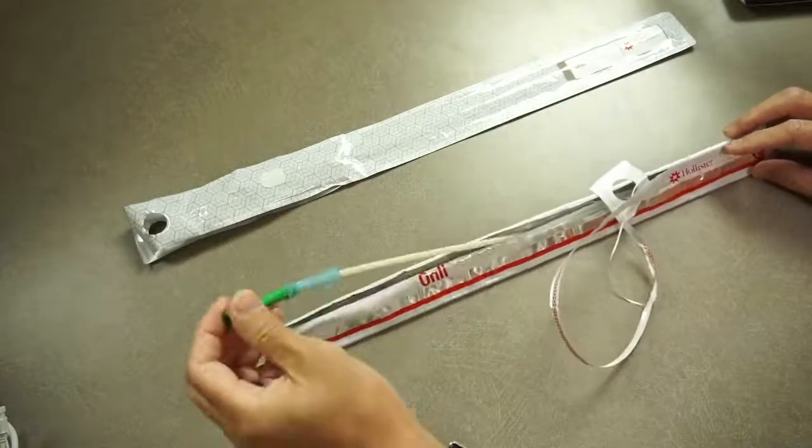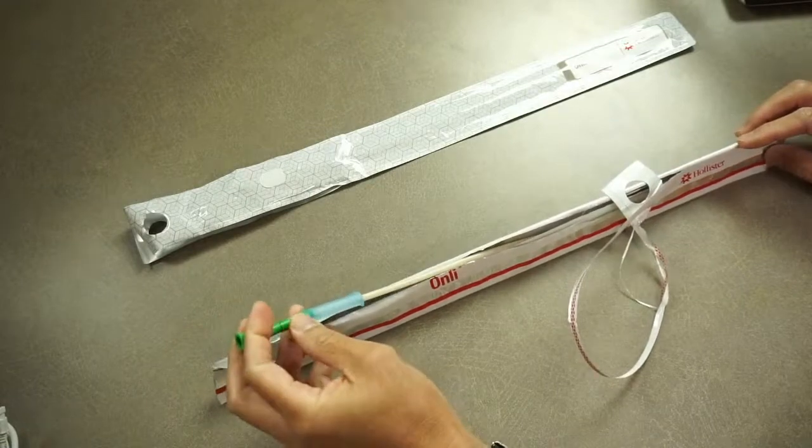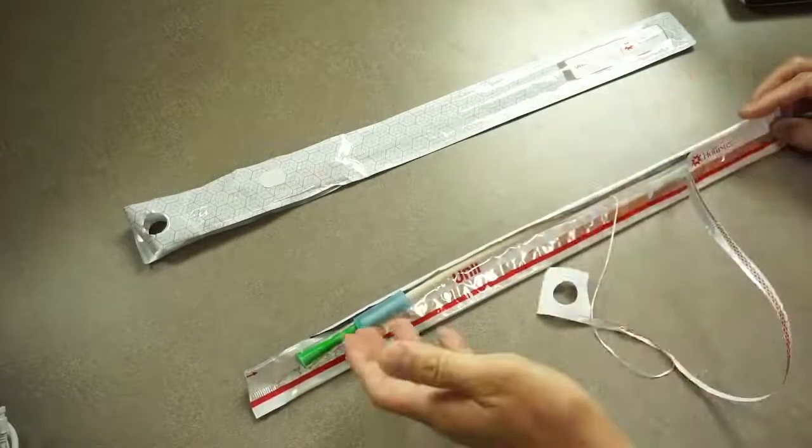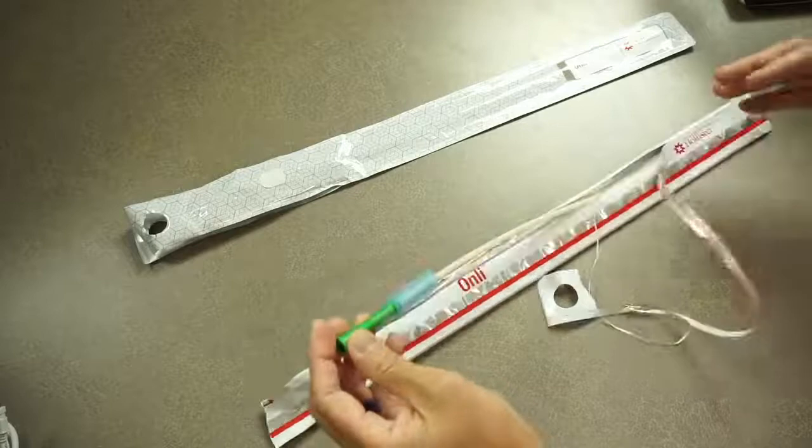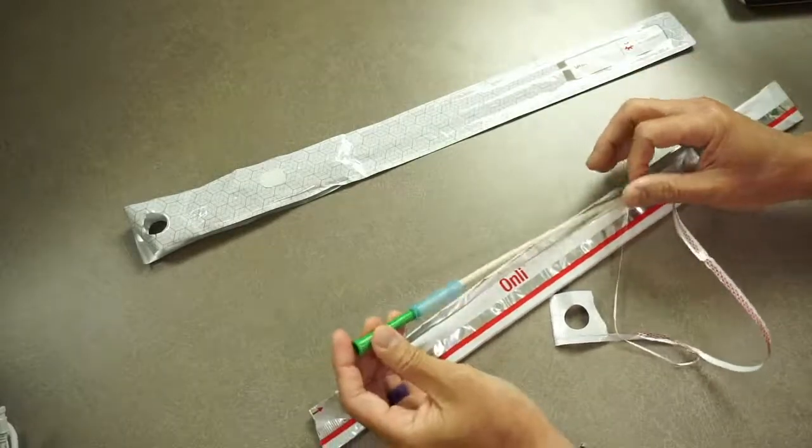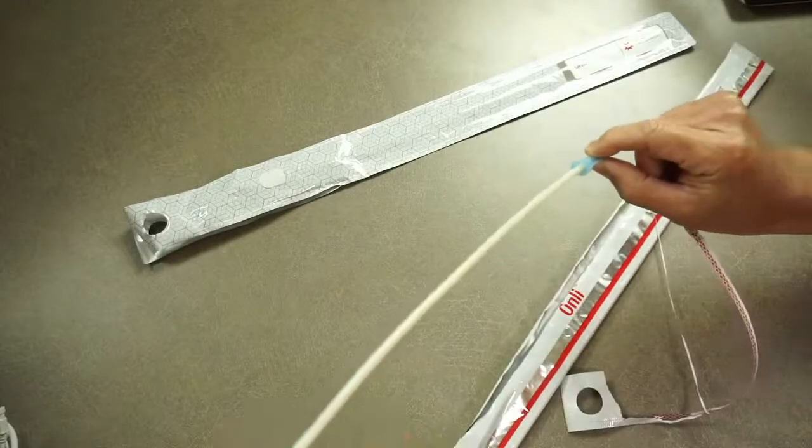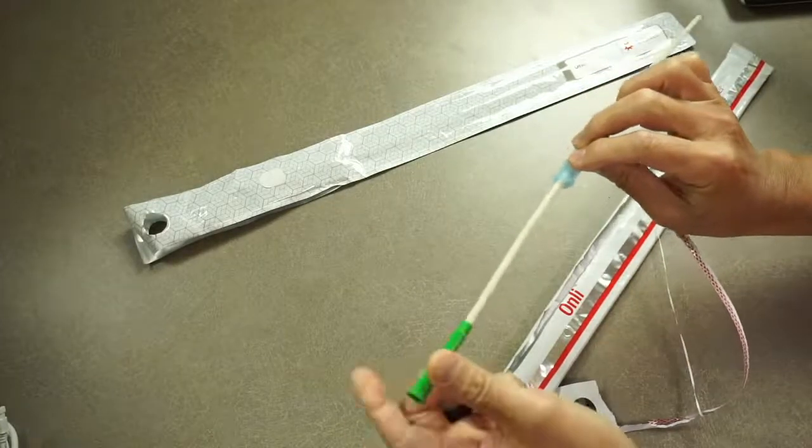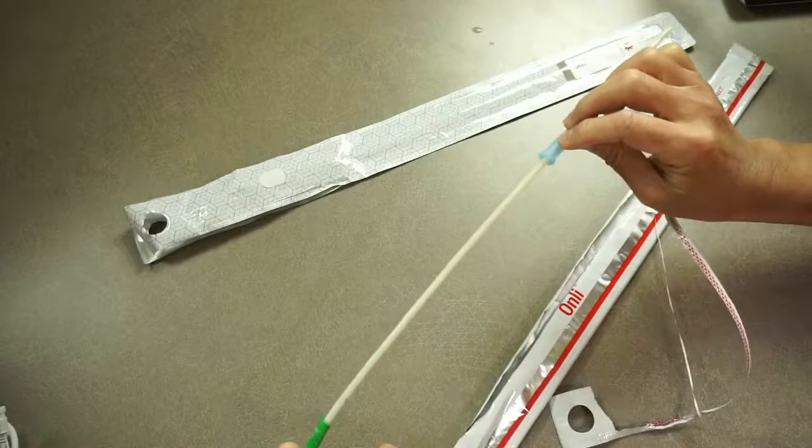For those interested, this is a pre-lubricated catheter, meaning it's pre-hydrated and ready to use. There's not a lot of fluid in here once you open it up, so you're not going to stain your clothes or surroundings. You don't have to find any water to get it very slick. There's a holder right here on the blue sleeve, so you can hold it without touching the catheter to maintain sterility.